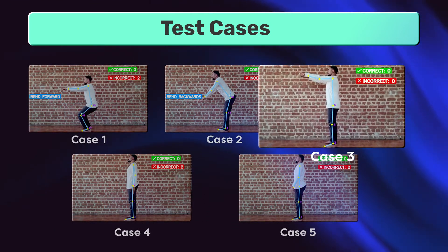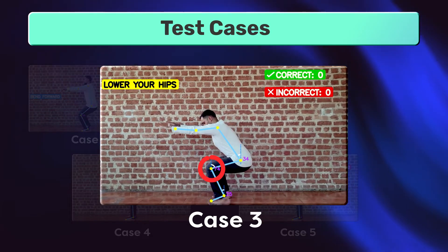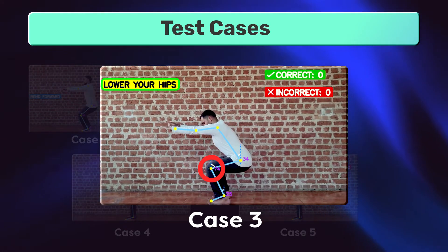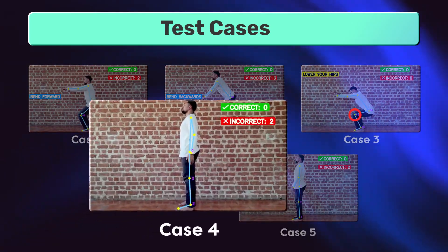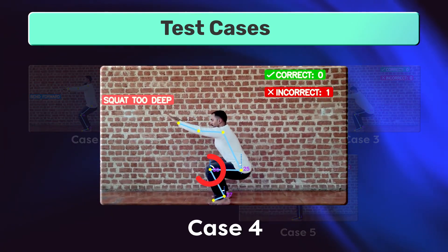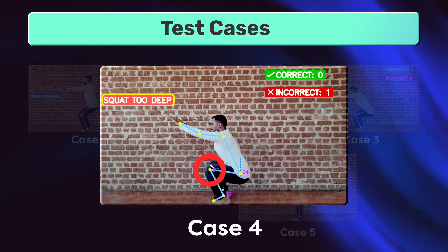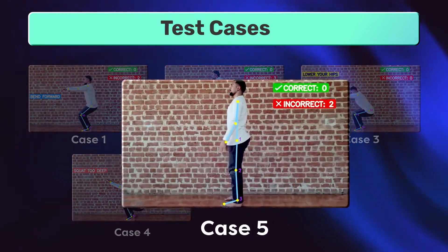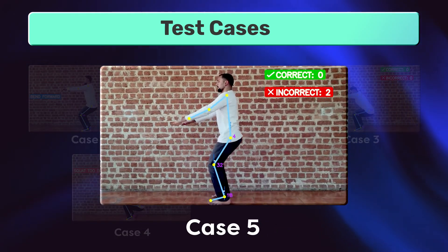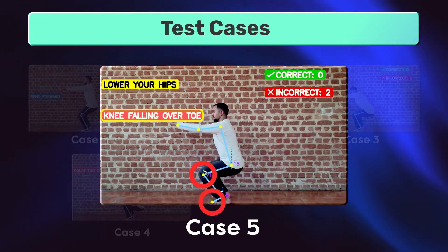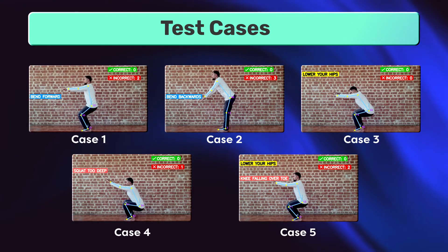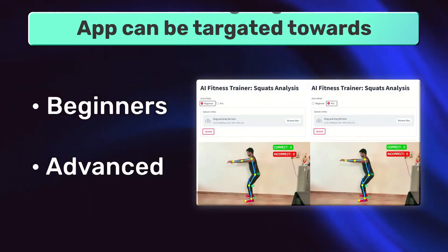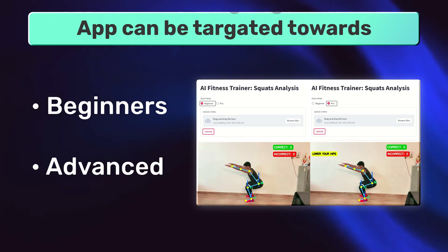Similarly, if the knee angle is between 50 degrees and 80 degrees, we get feedback to lower your hips. And if it goes beyond 95 degrees, we hear the feedback 'squat too deep.' The last test case: if the knee falls beyond the toe. Depending on the threshold angle ranges, the app can be targeted towards beginners or advanced users.